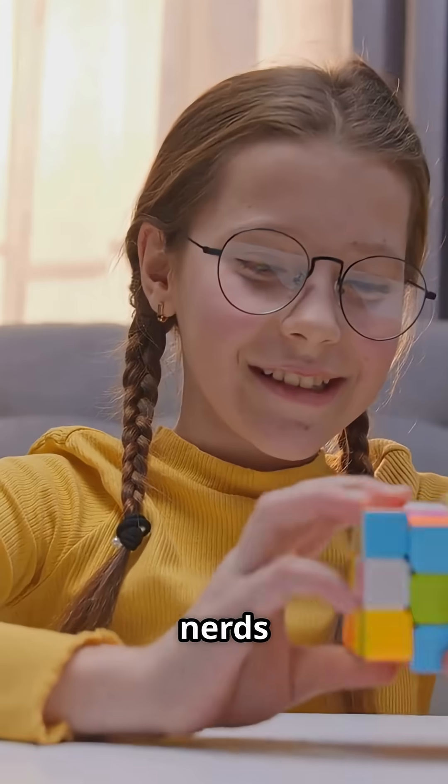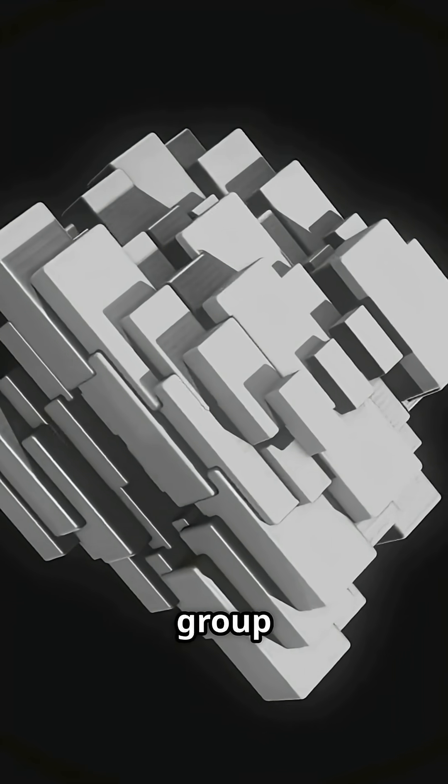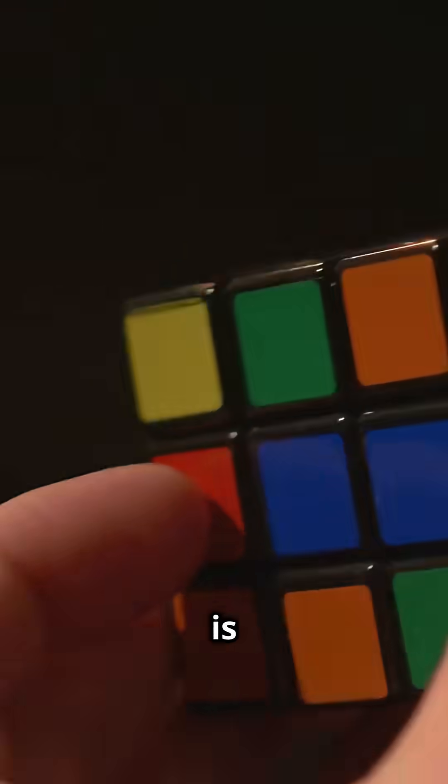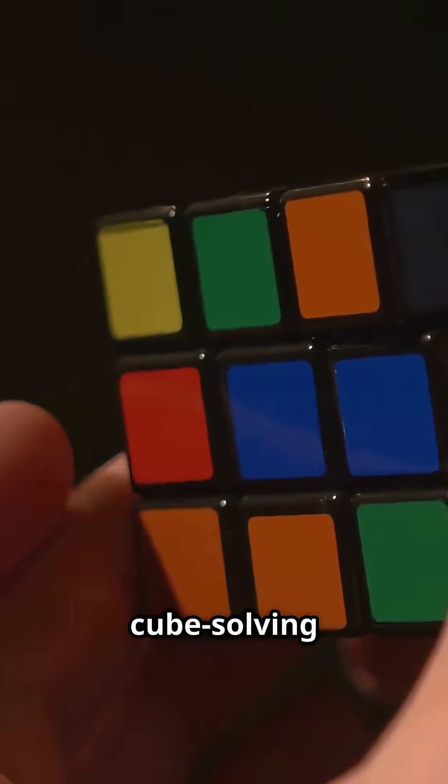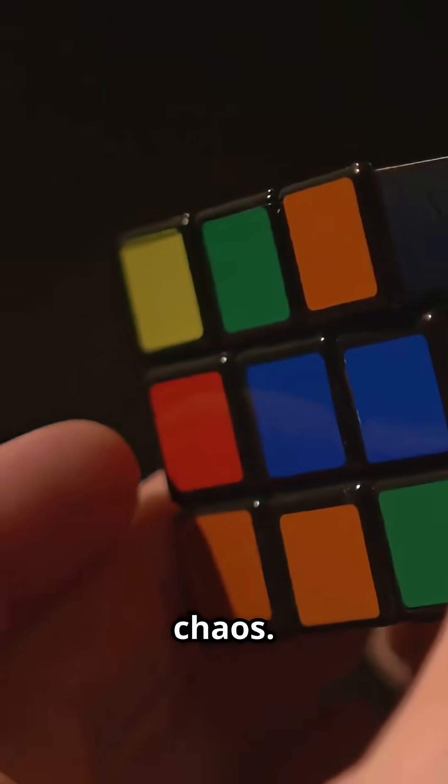So how do math nerds actually analyze the cube? Enter group theory. Every twist is a generator, and cube-solving algorithms are basically math equations that undo chaos.